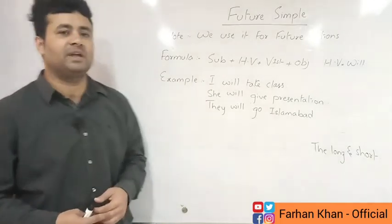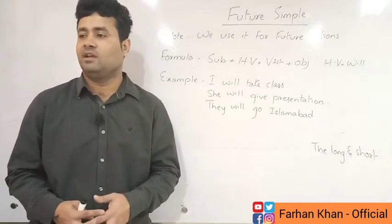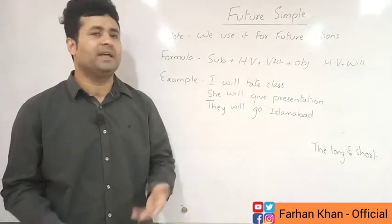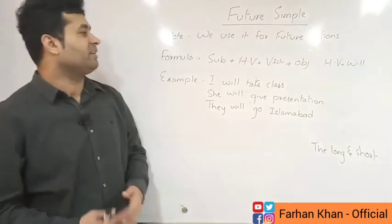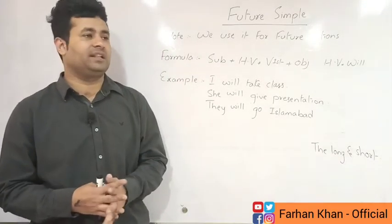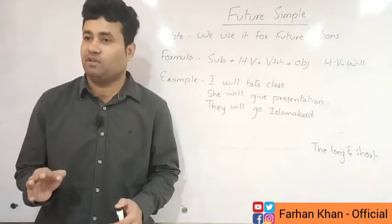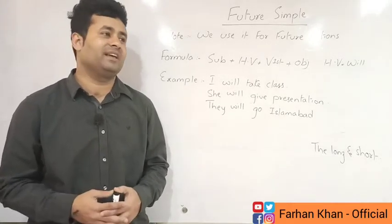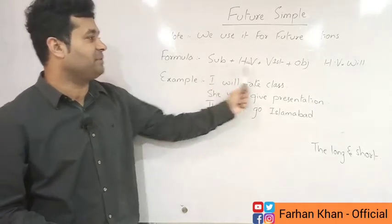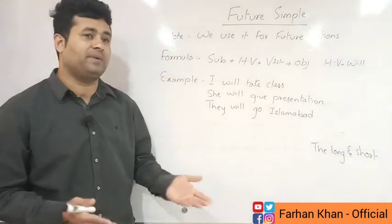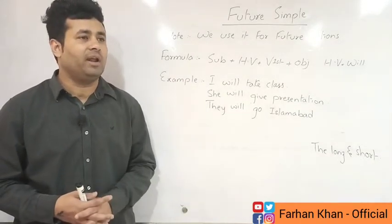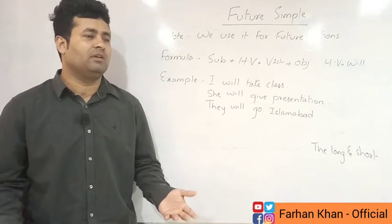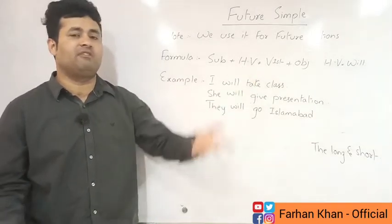This is a very simple formula. For example: 'I will take dinner.' What is the formula? It is very simple — you take the present simple formula and add one helping verb: 'will.' So the Future Simple formula is: Subject + will + verb (first form) + object.